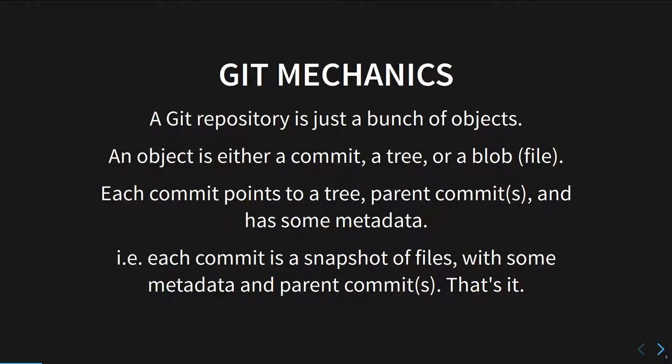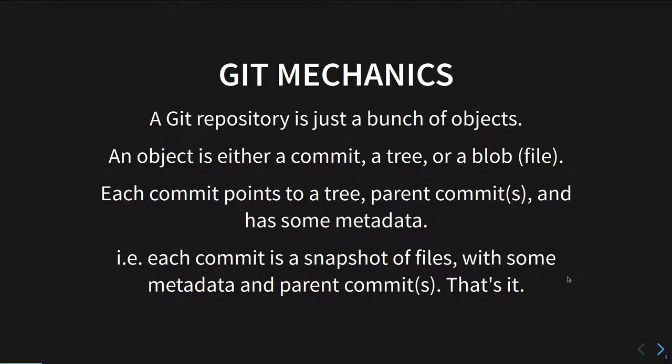Git is now moving to SHA-256. In git 2.29 they already have the ability to use SHA-256. The hash handling is now abstracted so they can change to different hashes in future. They're still working on backwards compatibility so you can eventually use repositories that contain both kinds of objects.